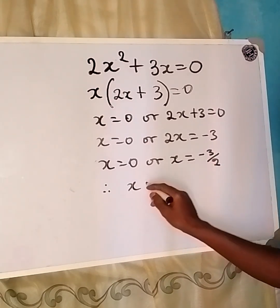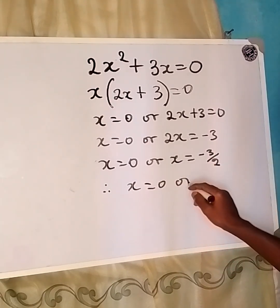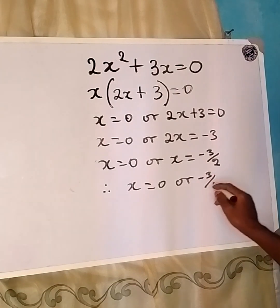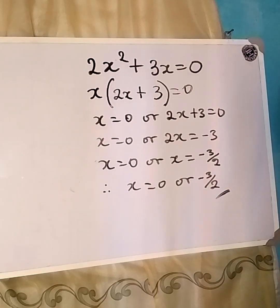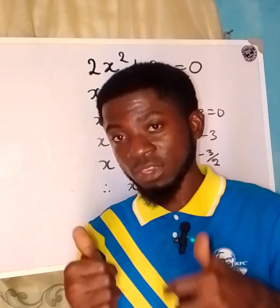Therefore, our x is equal to 0 or negative 3 over 2. So this is what you have and thank you for watching.